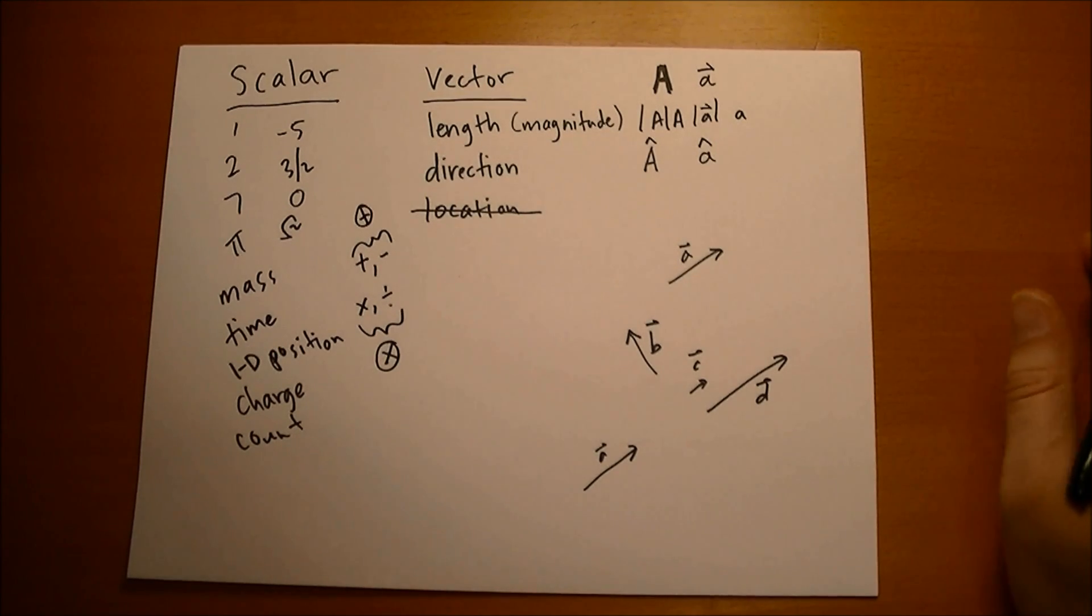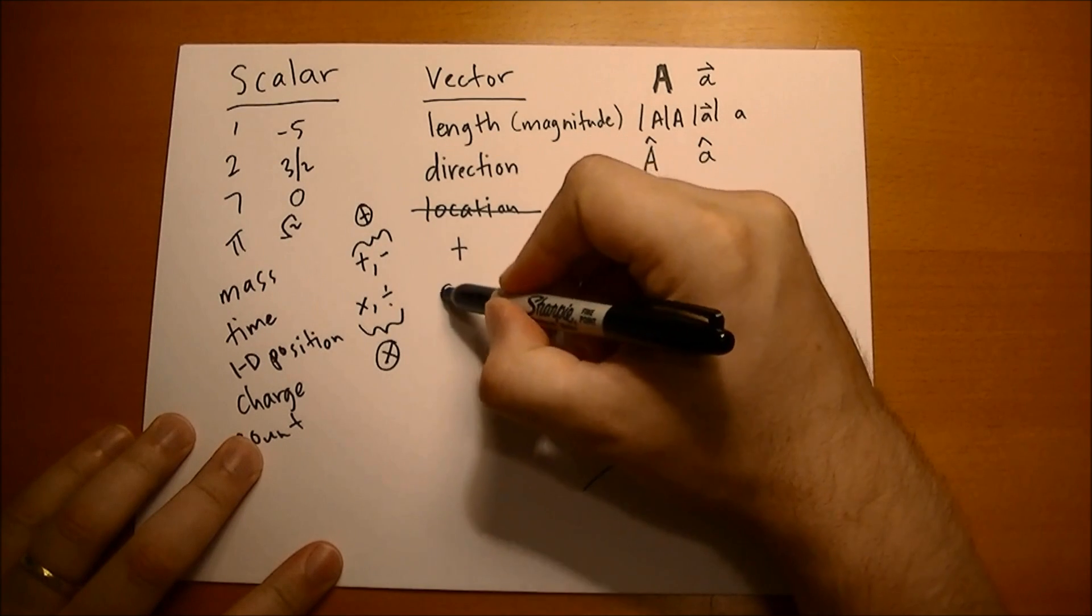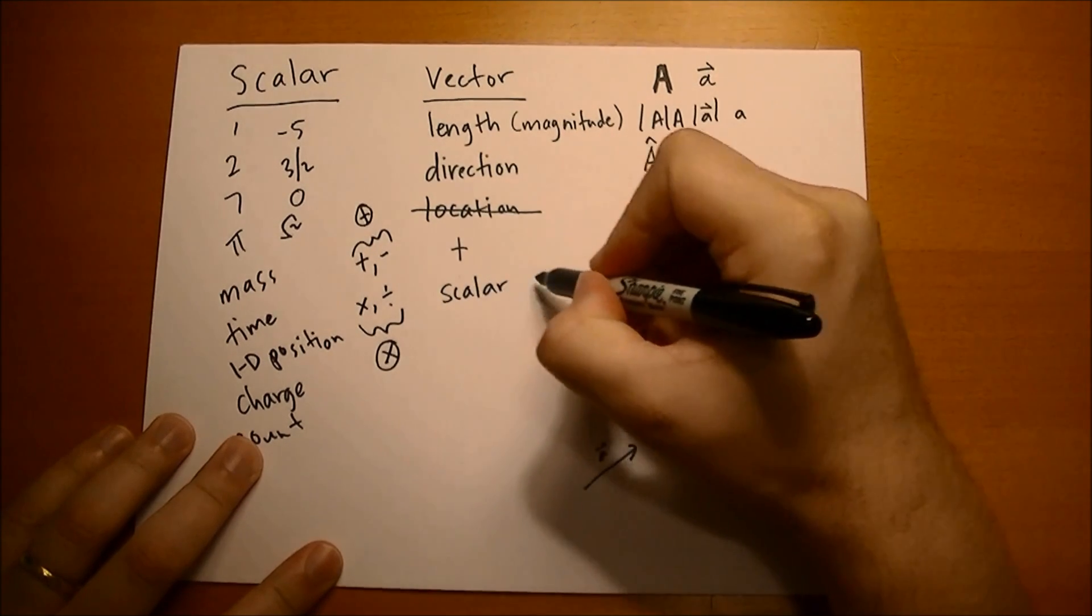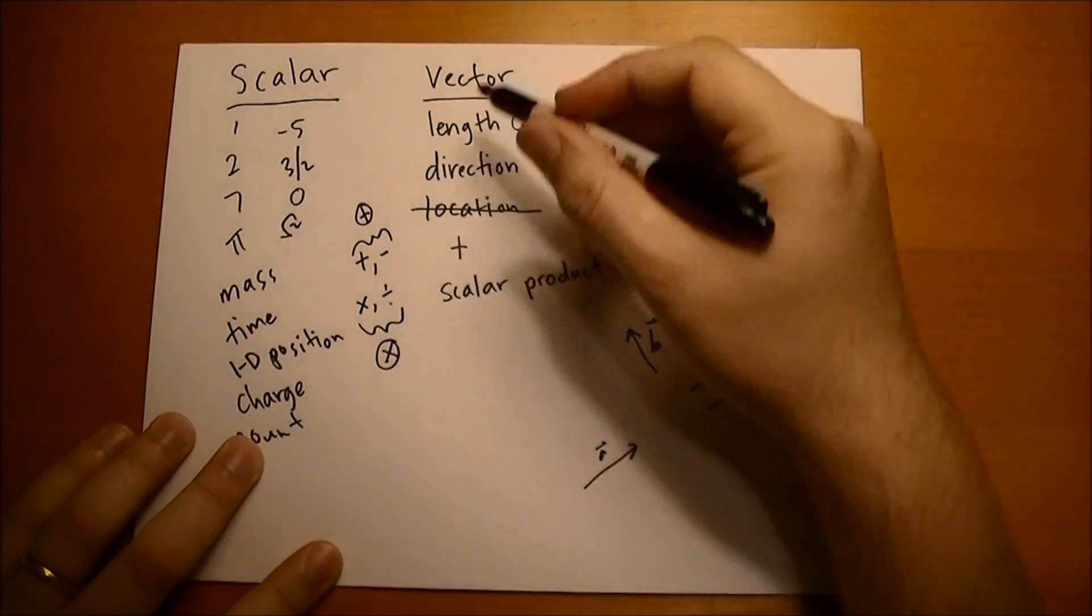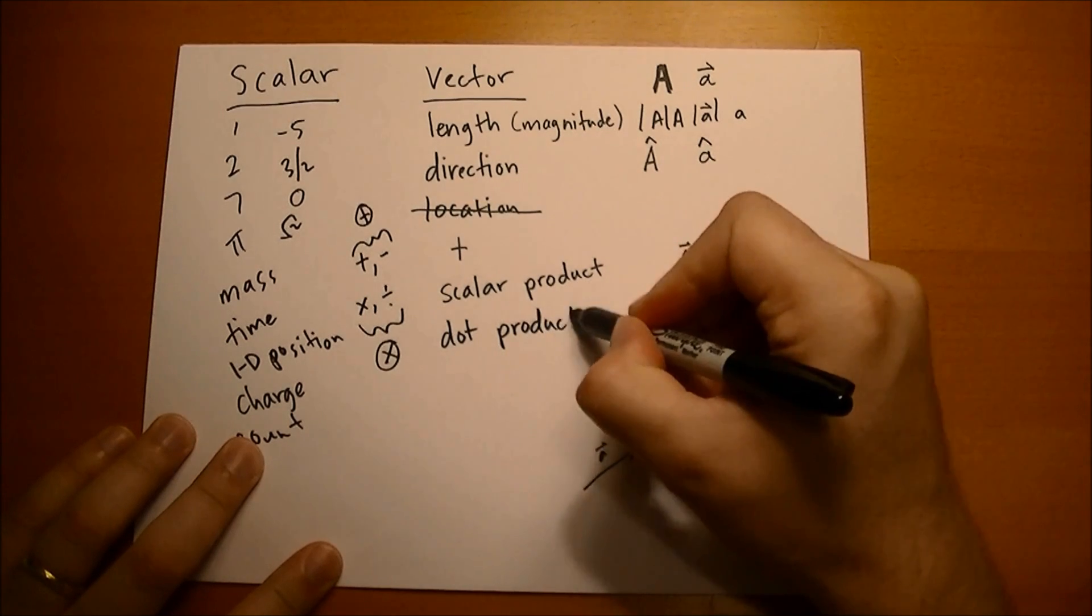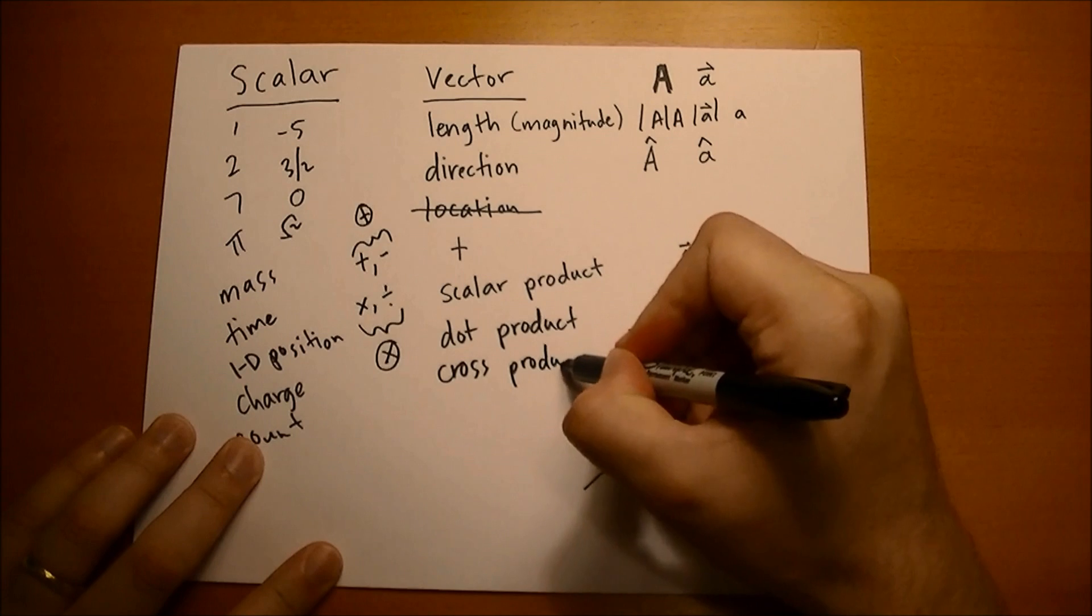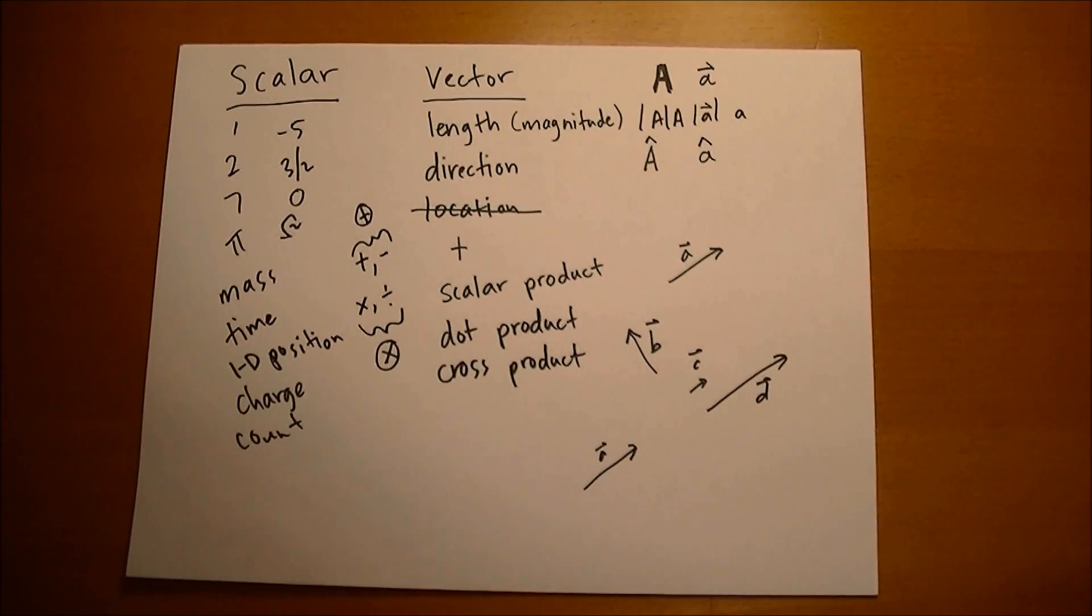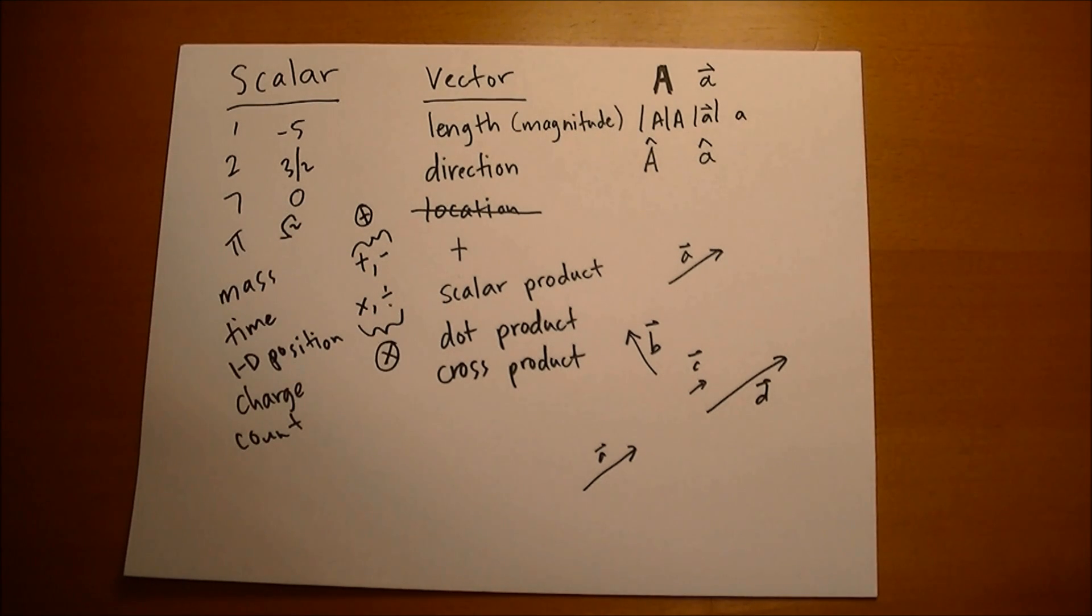Vectors behave similarly. You can add vectors, you can also do something called a scalar product, that's when you multiply a vector by a scalar, and there's two ways to multiply vectors by themselves: there's a dot product and there's the cross product. So there's addition and there's three different ways of multiplying vectors with different numbers.